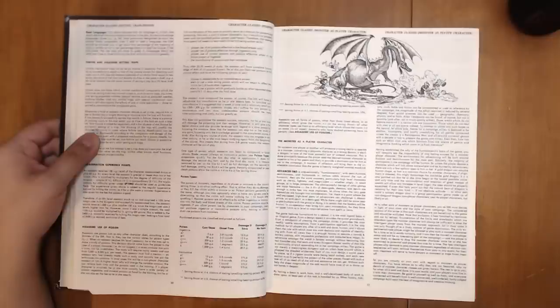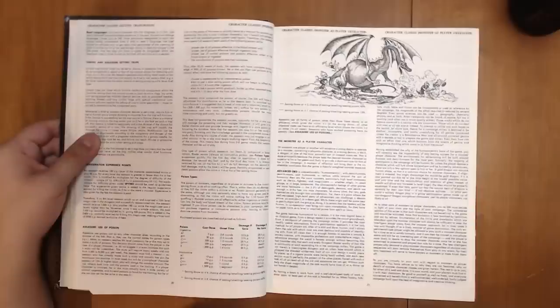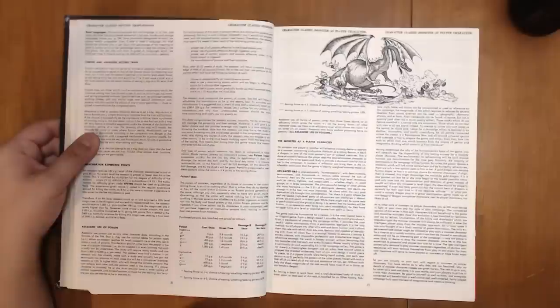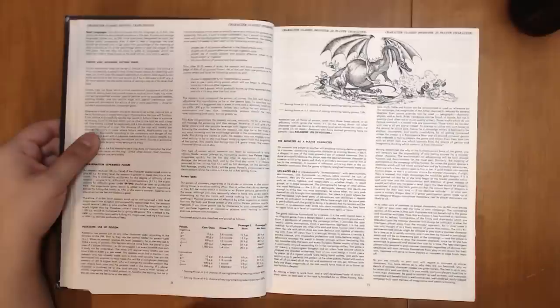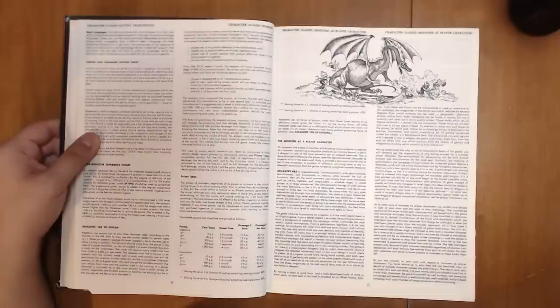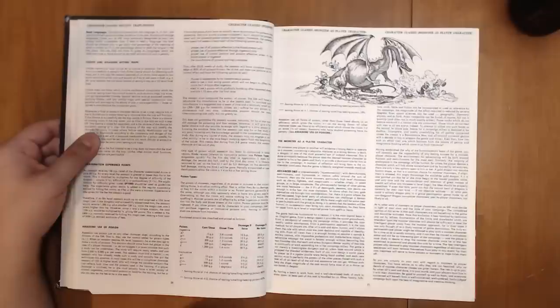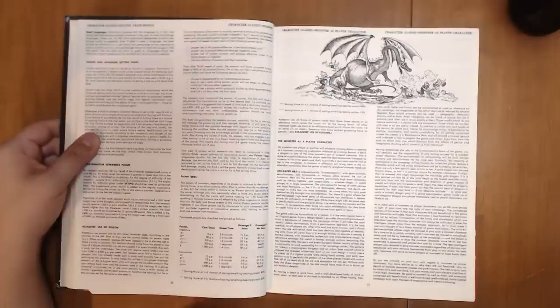So there you go. You can't even go back and forth on adventures with him. One type of poison which assassins can learn to compound is blade venom. Blade venom, always an insinuative poison, evaporates quickly. For the first day after its application, it does full damage. The second day, half, and by the third day, none. It is likewise removed by use. On the first hit, it will do full damage. On the second hit, half damage. And by the third, it will be gone. Partially evaporated or used death poisons allow the victim a plus 4 on his or her saving throw.